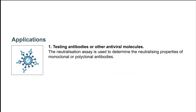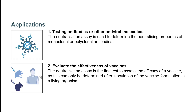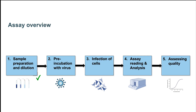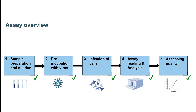Neutralization assays are mostly used to determine the neutralizing properties of purified antibodies or molecules, determine the effectiveness of a vaccine formulation, and study the humoral immune response of subjects exposed to either a vaccine or a natural infection. Whichever the sample or the application, a neutralization assay always involves the pre-incubation of a serial dilution of sample or control with a predefined amount of virus, the addition of this mix to the assay cells, an incubation for the time dictated by the type of virus and by the readout of choice, and finally data analysis and quality check.